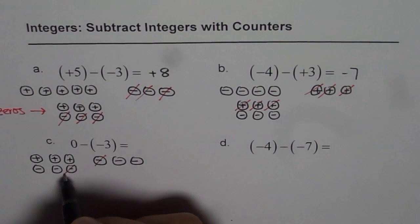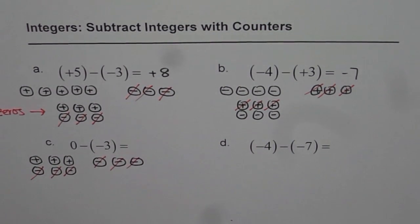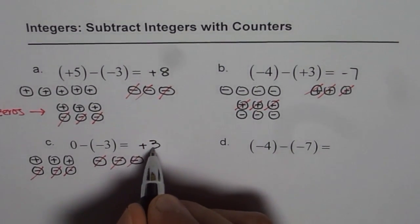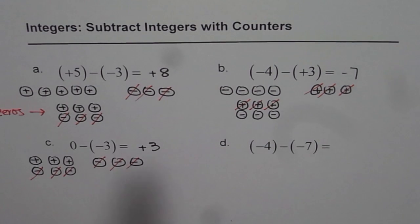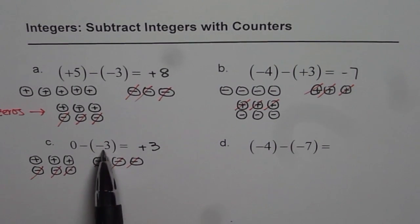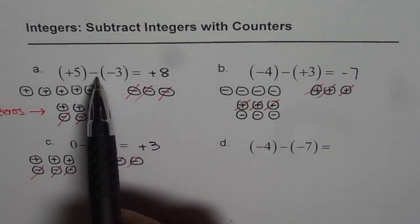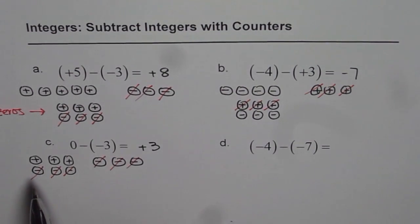Let us take away 1 by 1. What are we left with? We are left with the answer, which is plus 3. So plus 3 is what you get when you take away 3 minus from 0. So what you find is that negative negative makes it positive. Here also, negative negative makes it positive, so it becomes 5 plus 3 is 8.